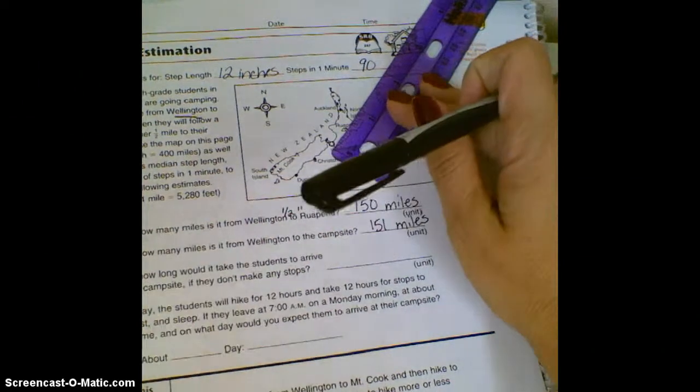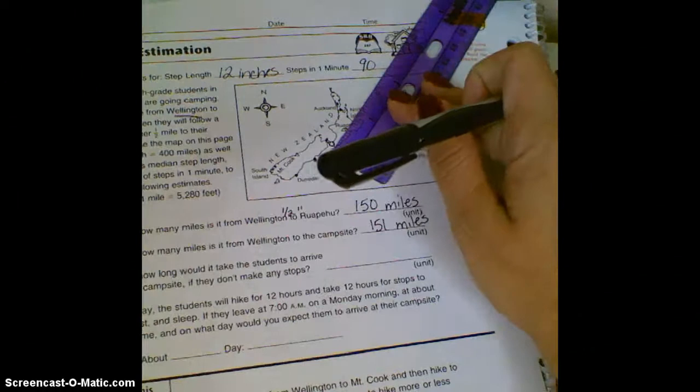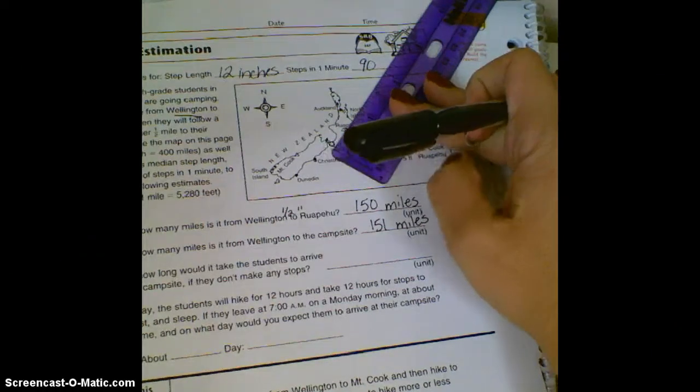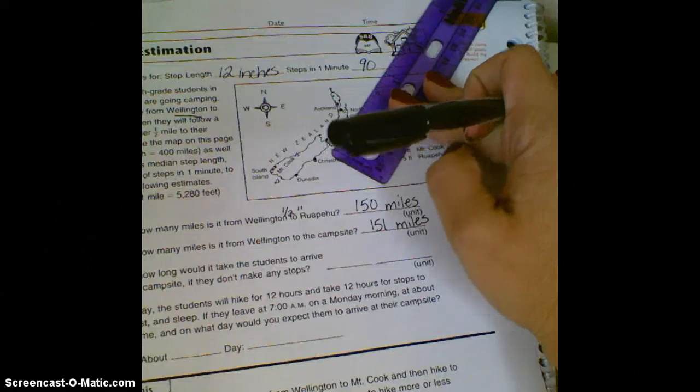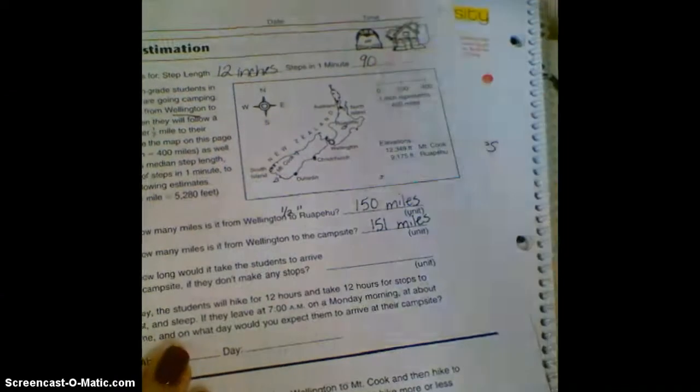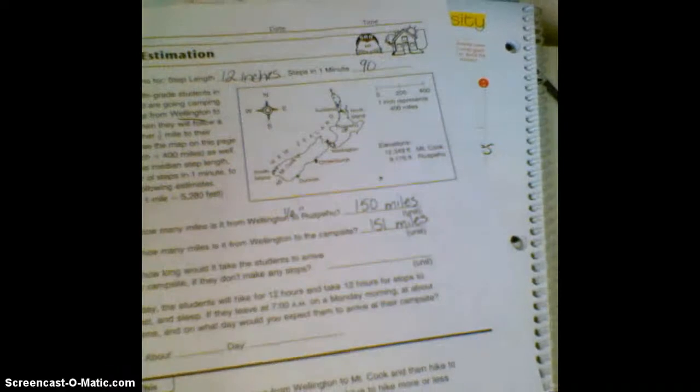And now it says about how long would it take the students to arrive at their campsite if they don't make any stops? They're walking. This is a long way to walk, 151 miles. So we need to do some multiplying and some dividing. In this case you can use a calculator if you want to. Pause now if you need to go get it.